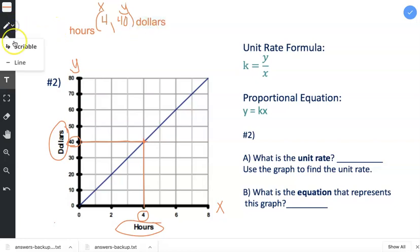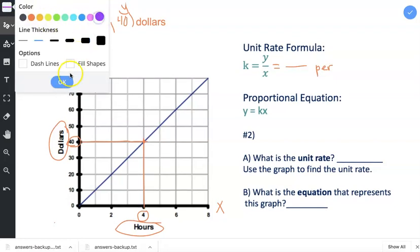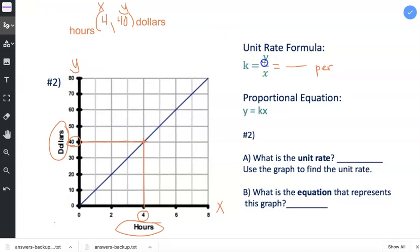And then I'm ready to fill this in over here in my unit rate formula. I'm going to draw my fraction bar and write the word per in between, and then I'll grab a different color. And I first need to find the y value. So the y value is 40, so I write 40 and then I'll write dollars.